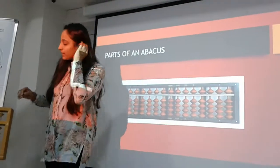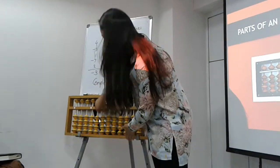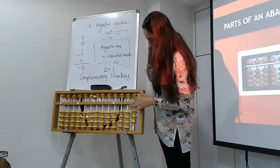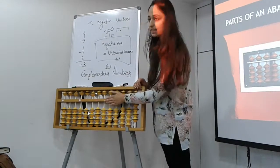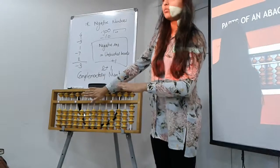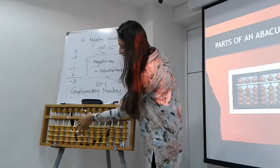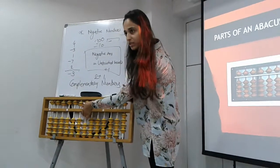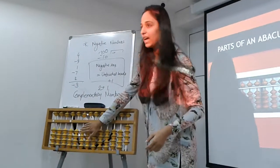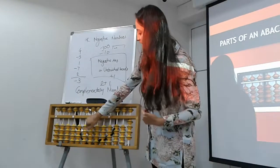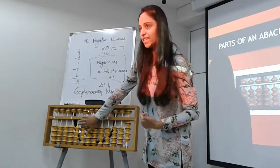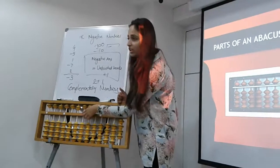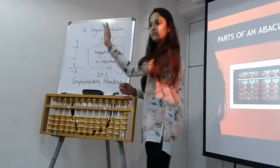Now, talking about the parts of an Abacus. This outer border is called the frame. These are the rods. These are the lower beads, upper beads, and the separator. If no beads touch the separator, the value is 0. As and when the beads start touching the separator, the values of the numbers start coming. Every lower bead has the value of 1, but it depends on the number system — on the units rod it will be 1, on the tens rod it will be 10, and so on. All the upper beads have the value of 5, but again it depends on the number system: 5, then 50, then 500, and so on.